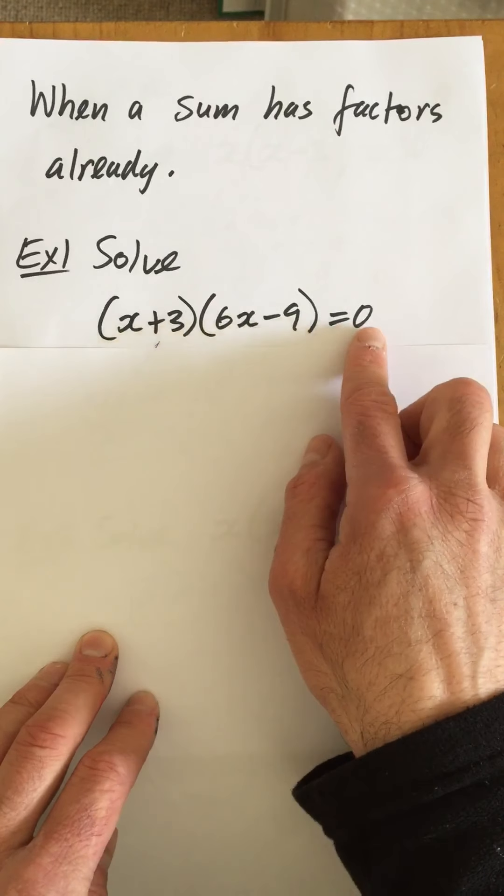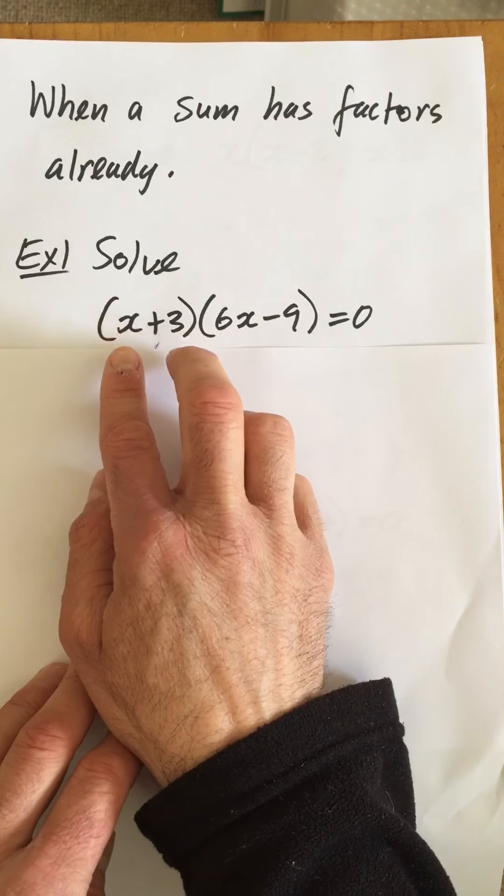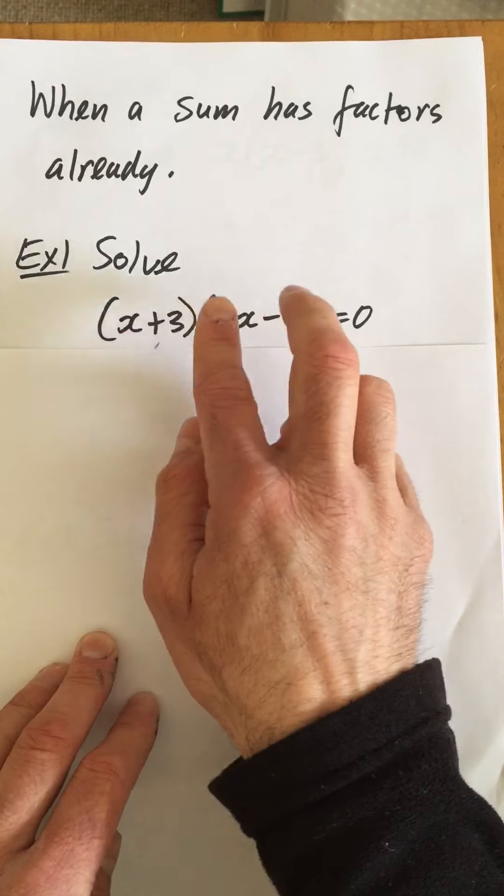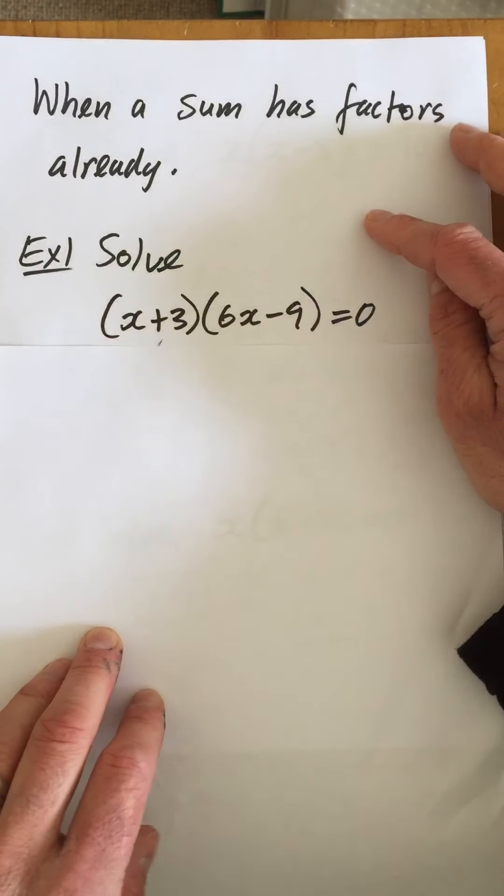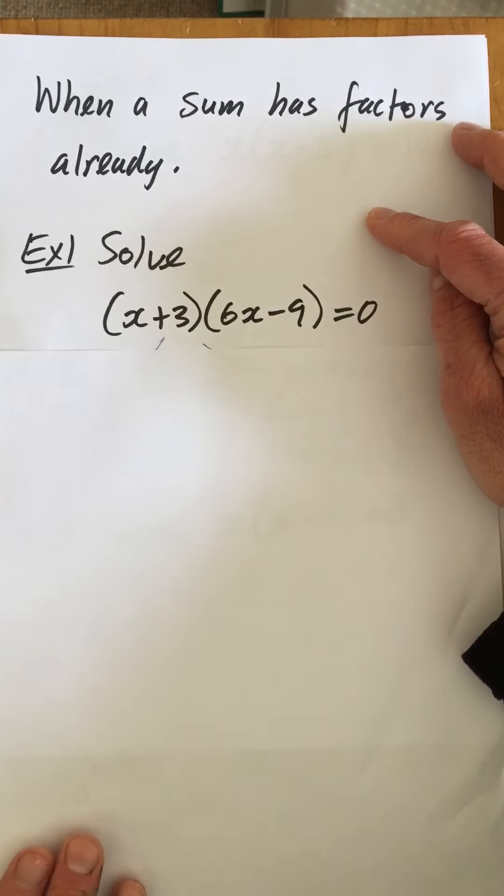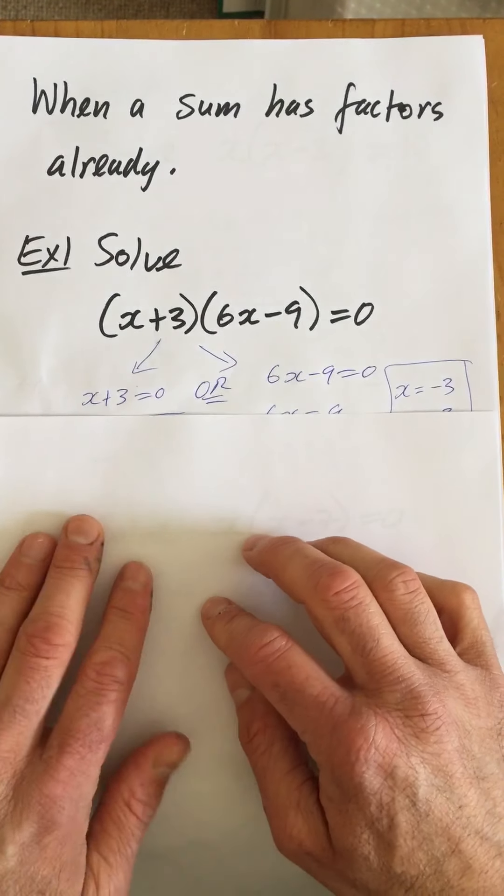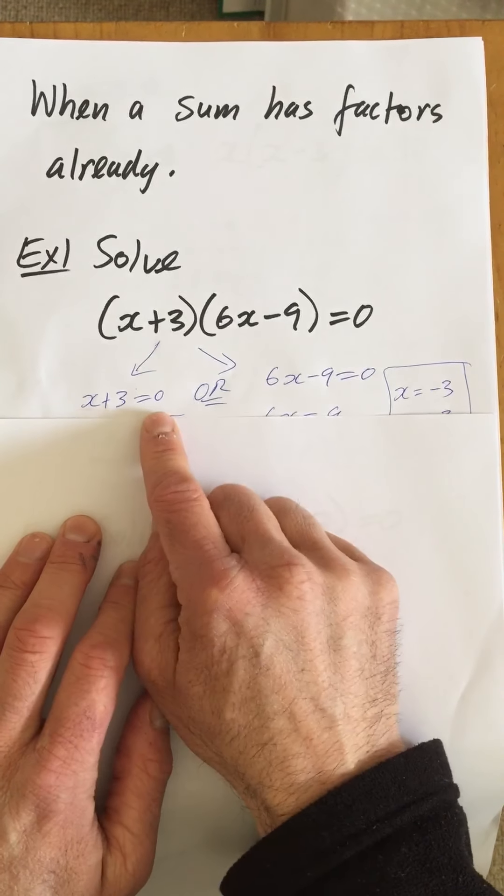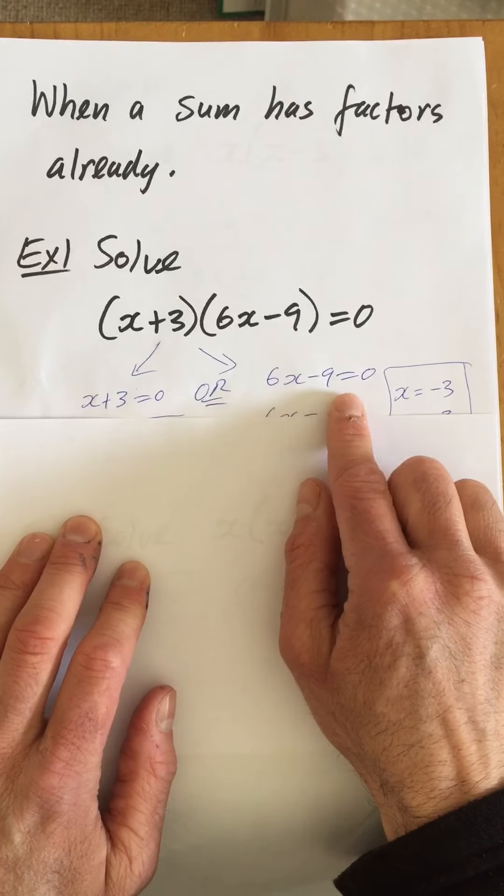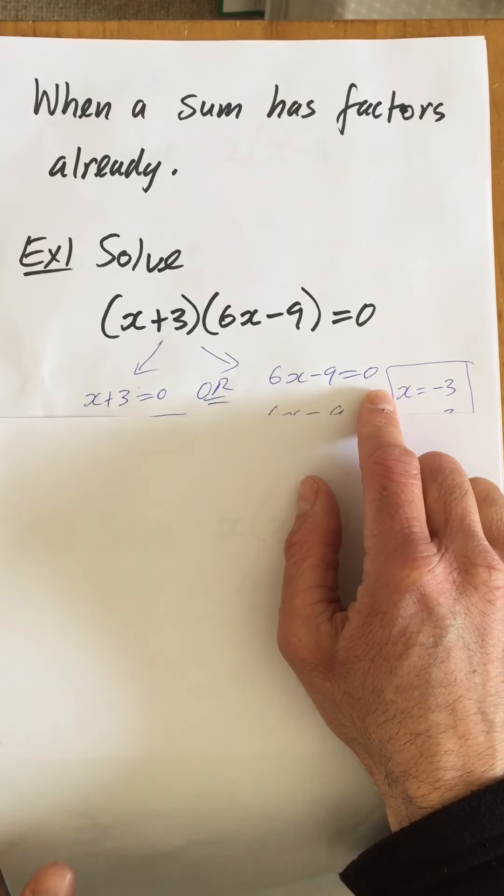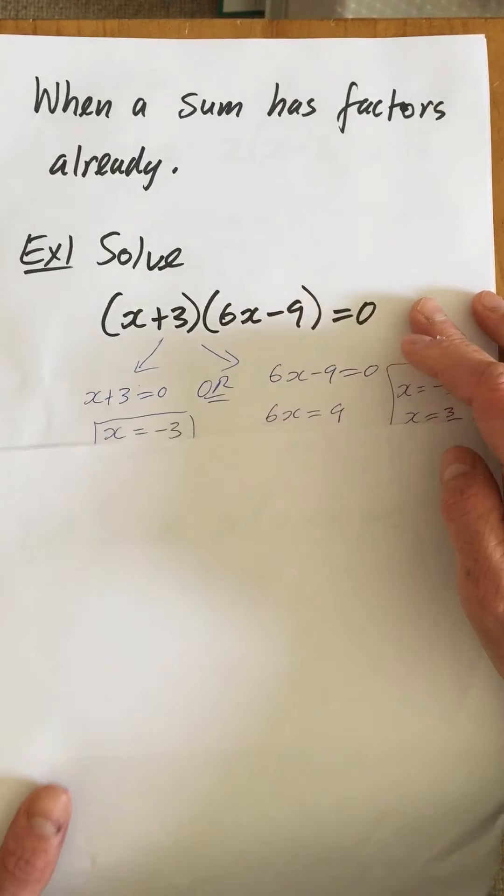And because it's equal to zero, we've already talked in our big idea video that something multiplied by something gives you zero. Well then we're allowed to write each factor equal to zero separately. So what we can do is we can put x+3=0 or 6x-9=0, and then we solve those equations separately.